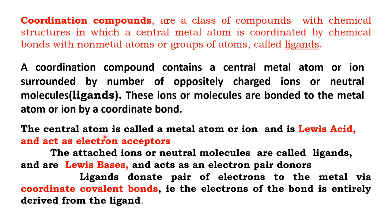The central metal atom is an electron acceptor. Ligands donate a pair of electrons to the central metal atom; hence ligands are Lewis bases. A Lewis base, having electron pairs and acting as an electron pair donor, donates a pair of electrons to the central metal atom. Hence a coordinate bond is established. In any coordination compound there should be donor atoms called ligands and a central metal atom to accept the pair of electrons and form a coordinate bond.